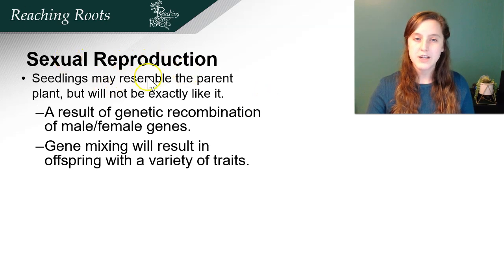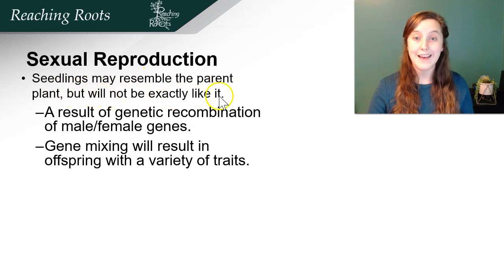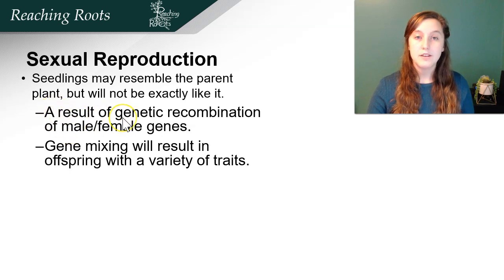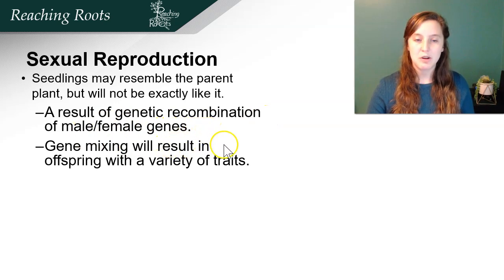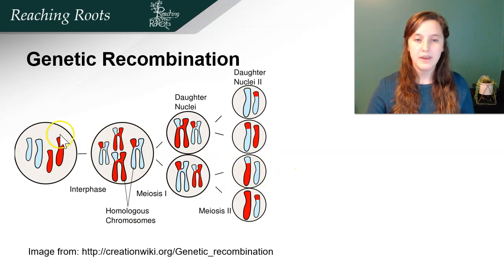Sexual reproduction, on the other hand, through seedlings may resemble the parent plant but may not be exactly like it — such as different tastes, different coloring, or different size. As a result of genetic recombination of the male and female gametes, we get this genetic diversity. Gene mixing will result in offspring with a variety of traits. This happens through sexual reproduction.